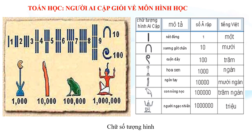Các em cùng quan sát hình ảnh về các chữ số tượng hình của người Ai Cập. Từ số 1 đến số 9 cũng khá là đơn giản - một là một nét đứng, hai là hai nét đứng. Tuy nhiên, đến số 10 thì người ta sẽ biểu thị bằng hình ảnh xương gót chân. Đến số 100 thì sẽ biểu thị bằng hình ảnh cuộn dây. Và những số sau thì các bạn cùng quan sát.